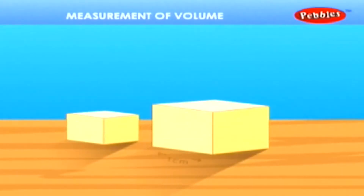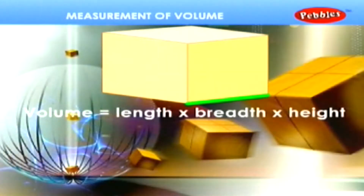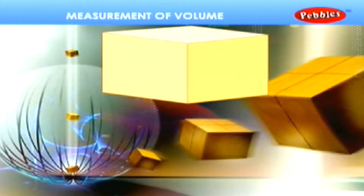Here is a block of length 1 cm, breadth 1 cm, and height 1 cm. The capacity of the block to hold something inside it is known as its volume. The volume of this block is the product of its length multiplied by breadth multiplied by height: 1 cm × 1 cm × 1 cm = 1 cm³. Therefore, the volume of this block is 1 cm³. Volume equals length times breadth times height.